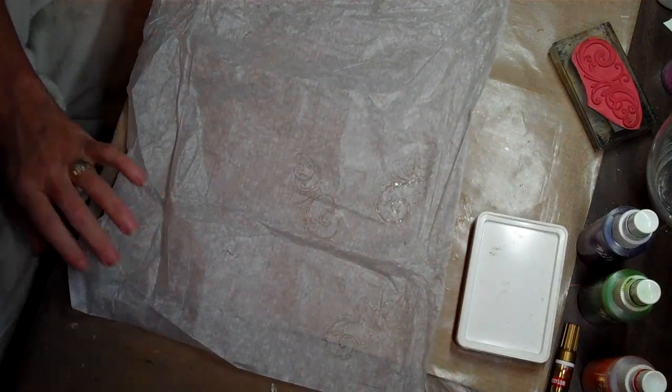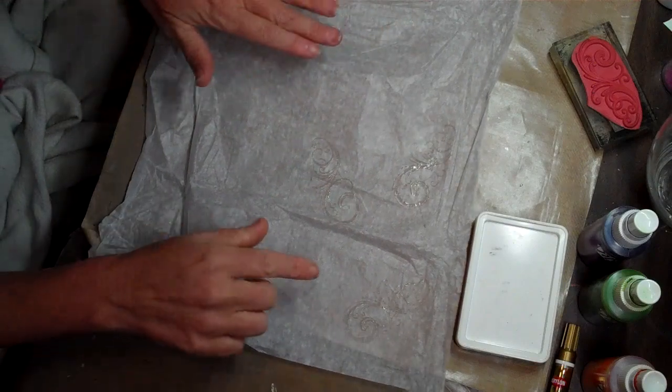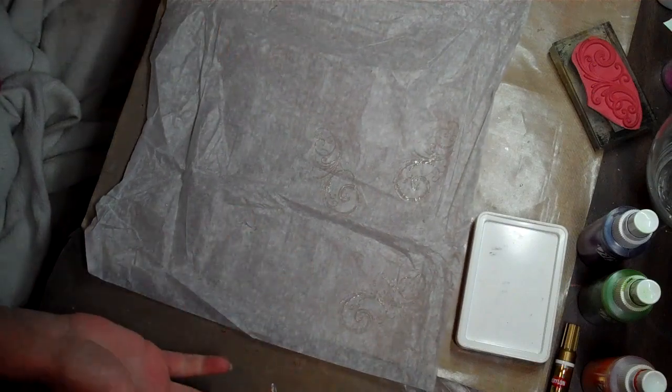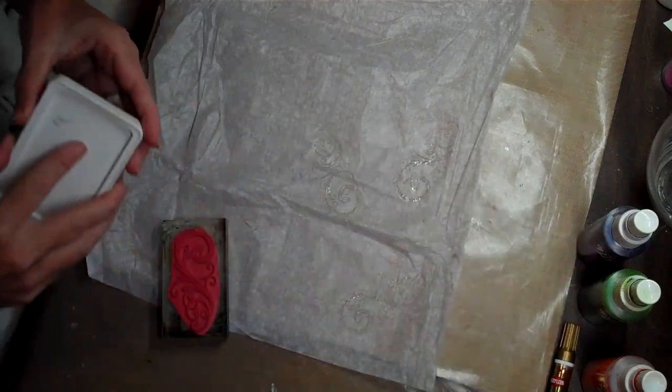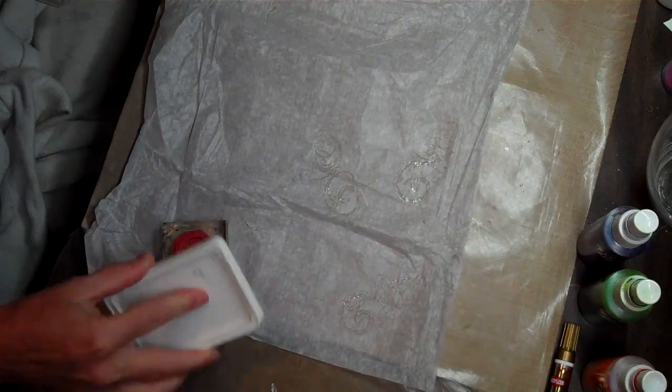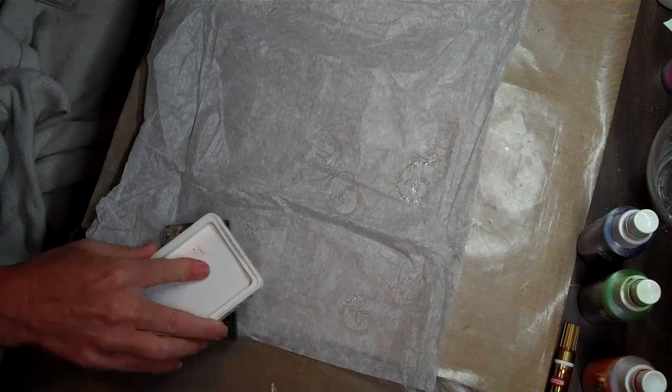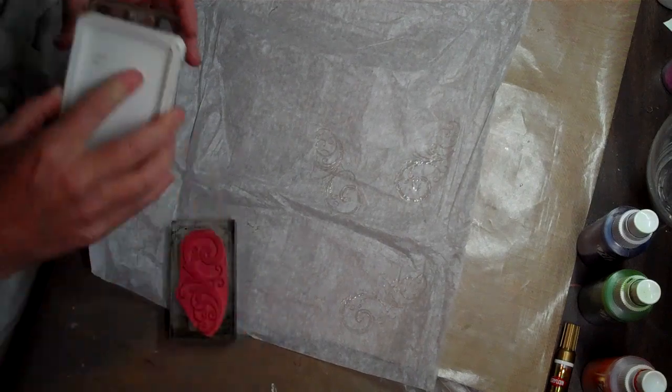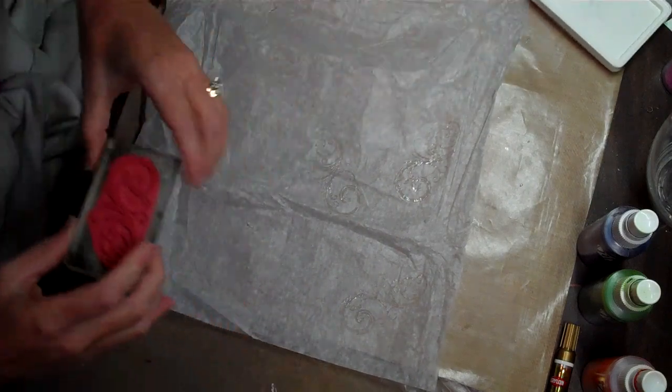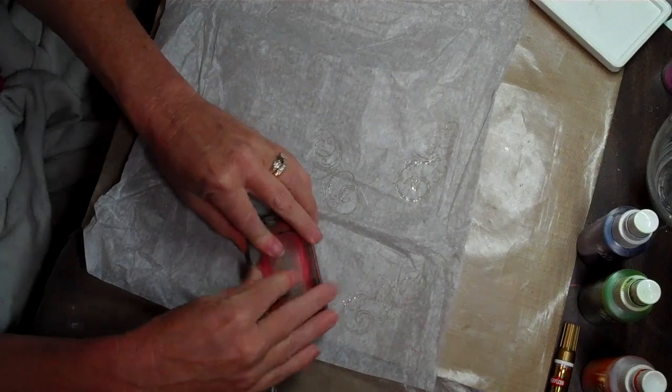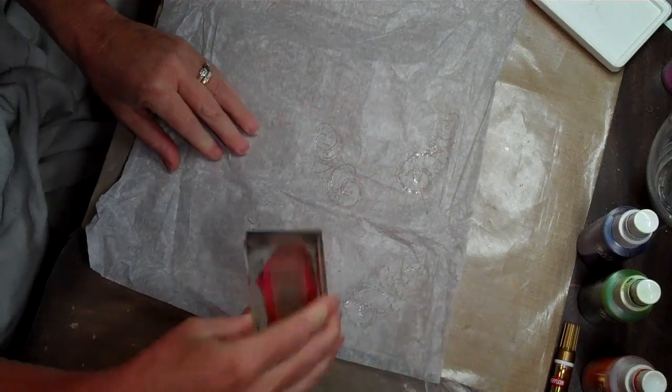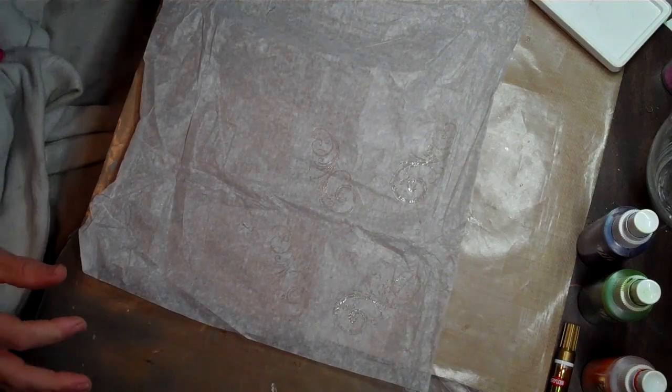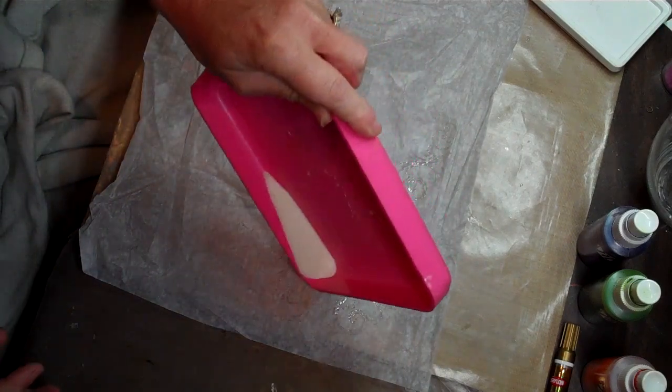Now, even though the embossing powder is clear and the tissue is also white, that image actually does show up pretty well because of that ultra high gloss embossing powder from Viva Las Vegas. It really shows up really nicely. I've been having a lot of fun with it. I actually am going to show you another video in the future on how to change the color of it. How cool is that?